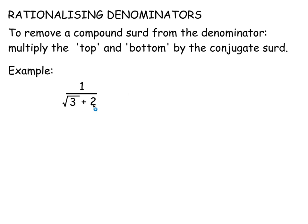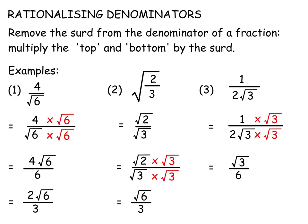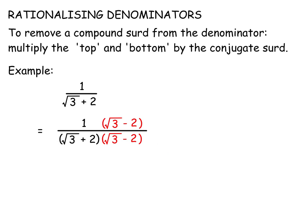When there's a compound surd on the bottom, multiply top and bottom by the conjugate — change the plus to a minus. So for something over root 3 plus 2, multiply by root 3 minus 2. The bottom gives the result we found: negative 1. The top becomes root 3 minus 2. Dividing by negative 1 switches the signs, giving negative root 3 plus 2, which we write as 2 minus root 3. That's rationalising the denominator using a conjugate surd.